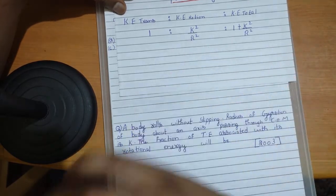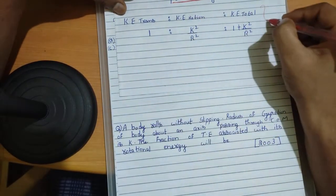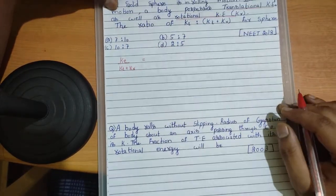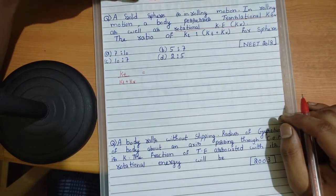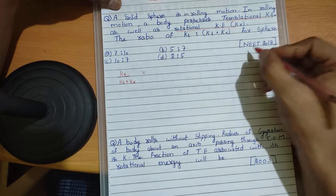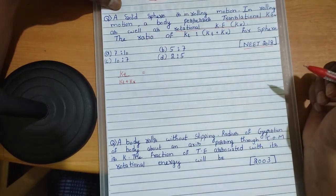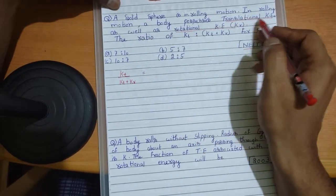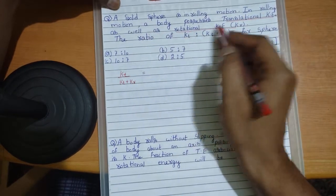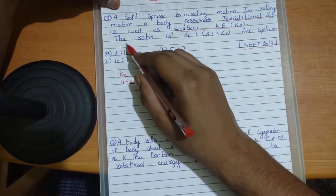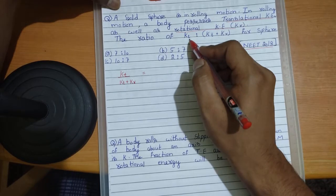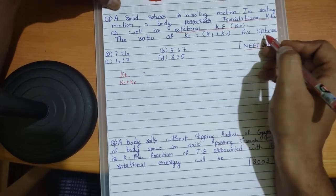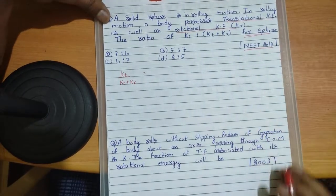With this trick you can solve almost every problem asked from this topic. The problems I'll be taking are from previous year questions only. This question is from NIT 2018. A solid sphere is in rolling motion. A body in rolling motion possesses translational kinetic energy as well as rotational kinetic energy. They're asking us to find the ratio of translational kinetic energy to the sum of translational and rotational kinetic energy for the sphere.